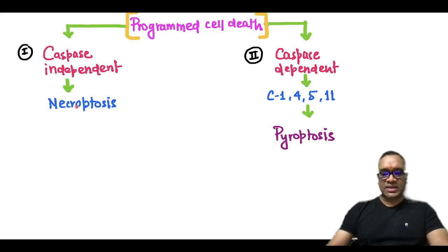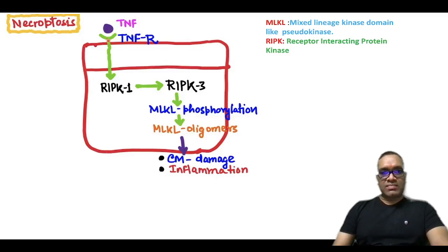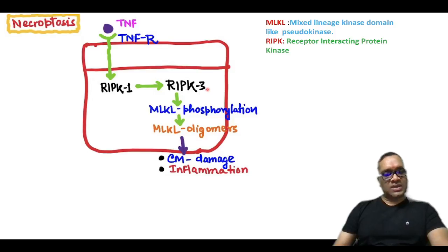In necroptosis, tumor necrosis factor combines with its complementary receptors, which activates RIPK1 — receptor interacting protein kinase 1. RIPK1 then activates or recruits RIPK3, which is receptor interacting protein kinase 3.